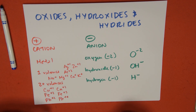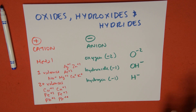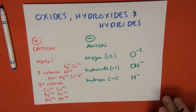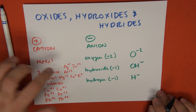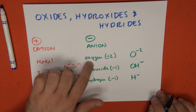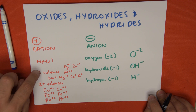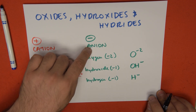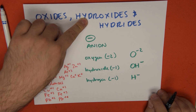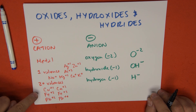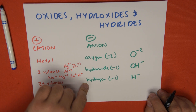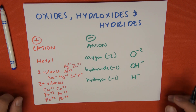Remember, these charges are not made up — you can find them on a periodic table or in an oxidation chart. If I have a metal and an oxygen ion, I'm going to form an oxide. If I have a metal cation and a hydroxide anion, I'm going to get a hydroxide. And if I have a metal and a hydrogen atom as an anion, I'm going to get a hydride.